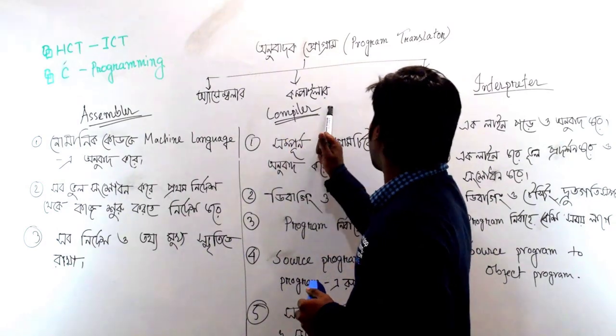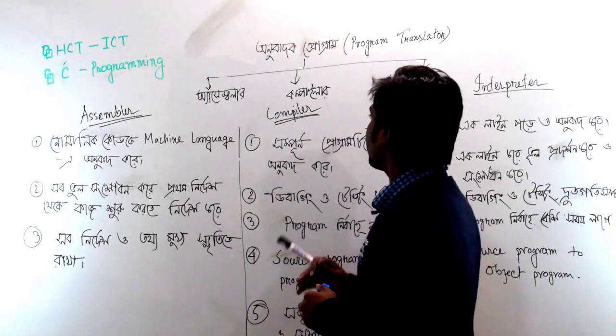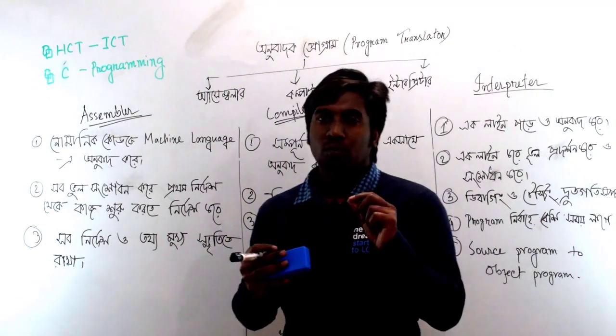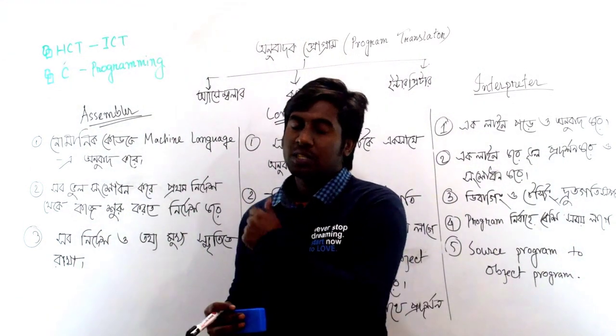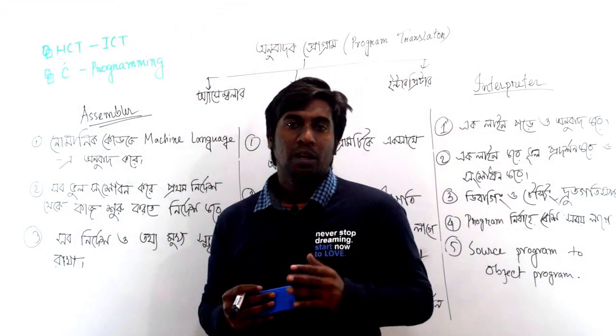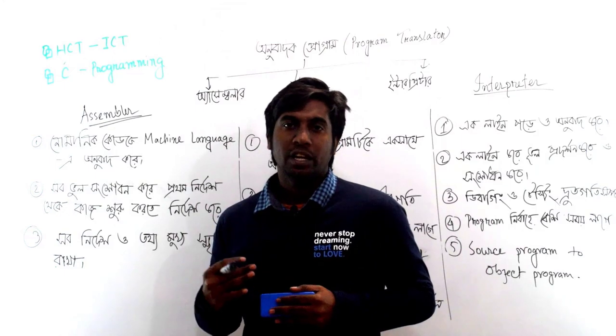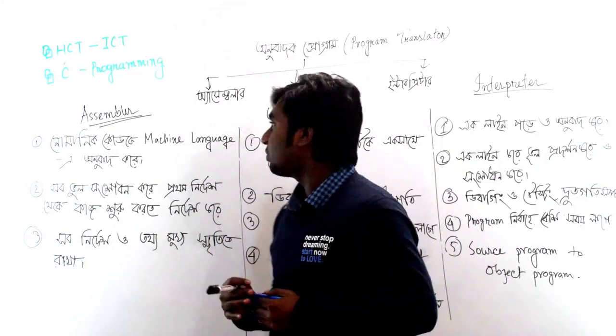The three program translators are: assembler, compiler, and interpreter. These are the three main ways to translate a program.